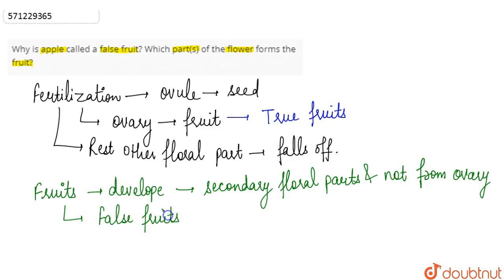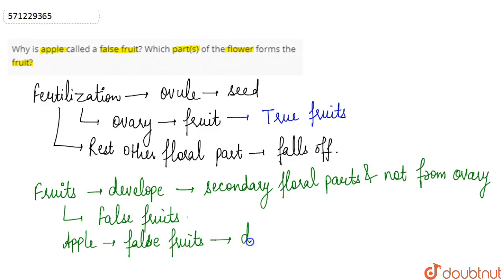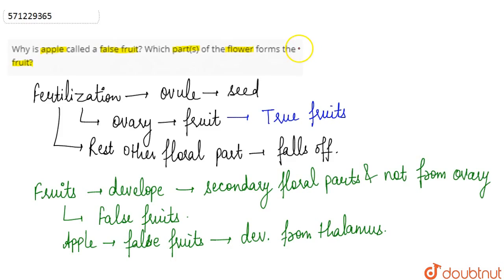then such fruits are known as false fruits. So in case of apple, if we talk about why apple is a false fruit — because apple does not develop from the ovary; rather it develops from the thalamus. And that is the reason why it is called a false fruit. Now answering the second part of the question: which part or parts of the flower forms the fruit? Mostly the ovary forms the fruit.